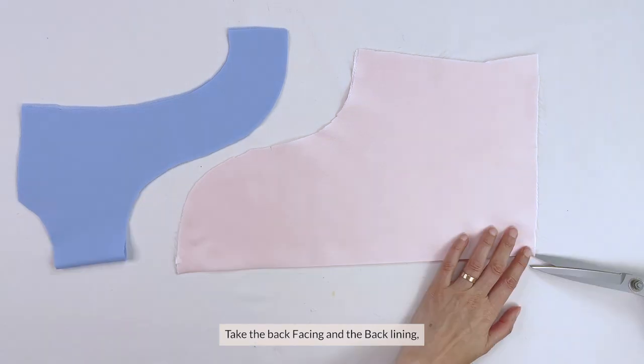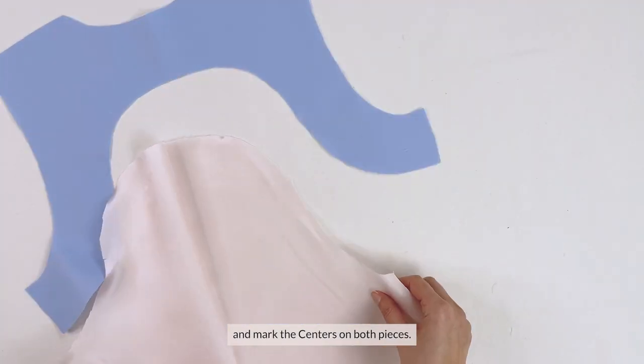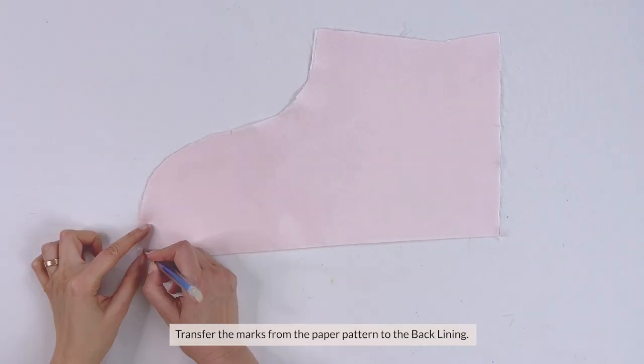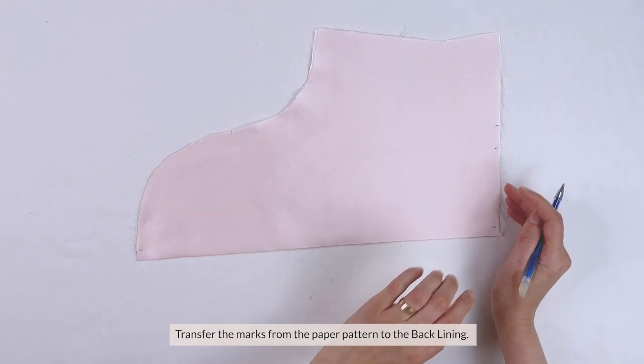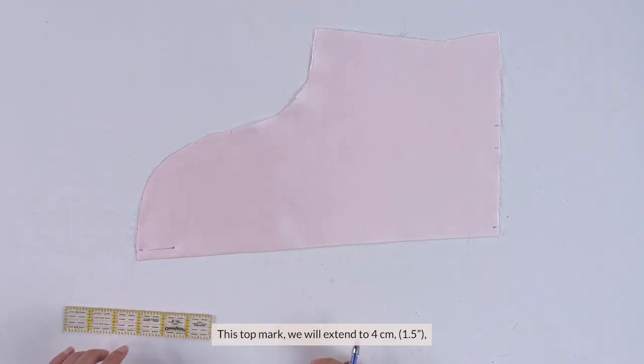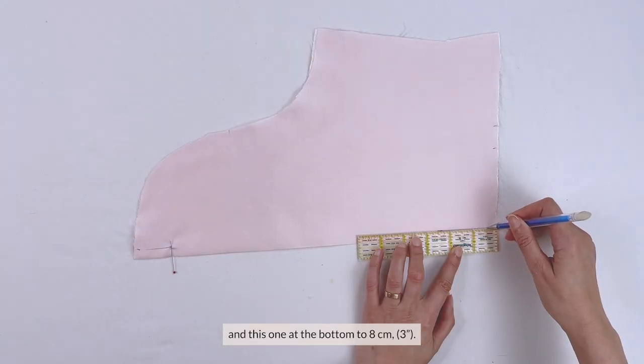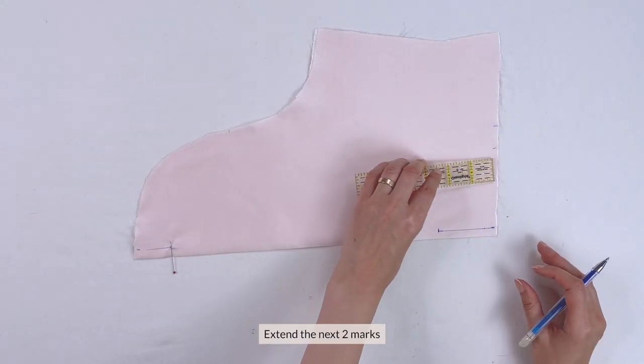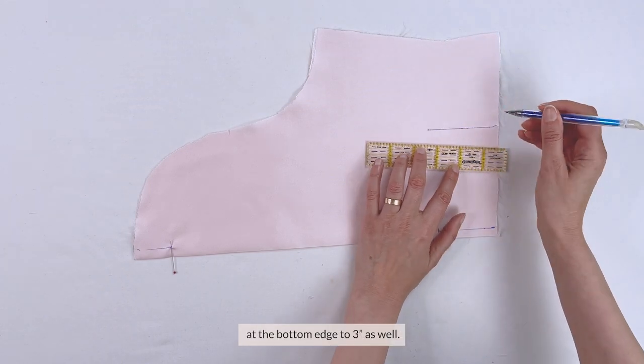Take the back facing and the back lining and mark the centers on both pieces. Then transfer the marks from the paper pattern to the back lining. This top mark we will extend to 4 centimeters or 1.5 inches and this one at the bottom to 8 centimeters. Extend the next two marks of the bottom edge to 3 inches as well.